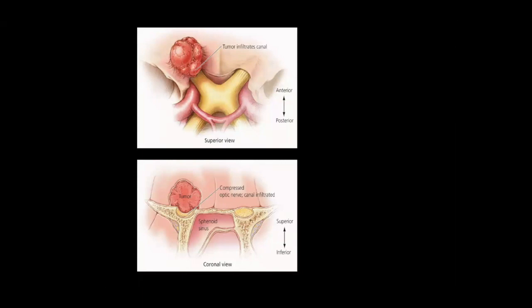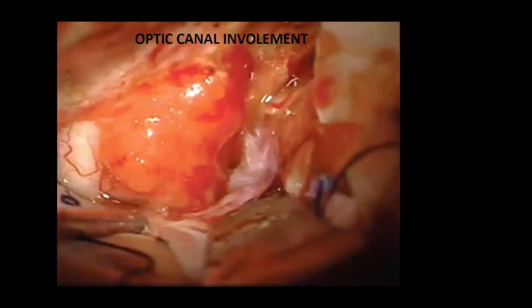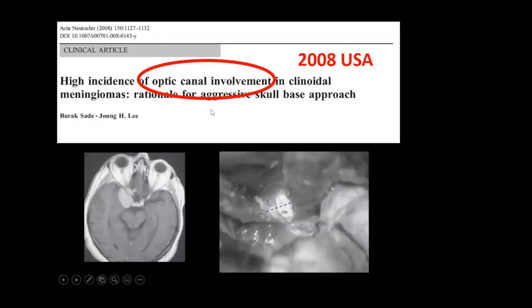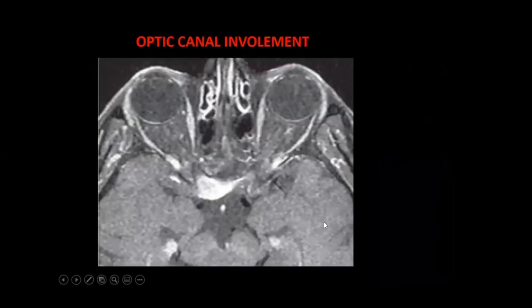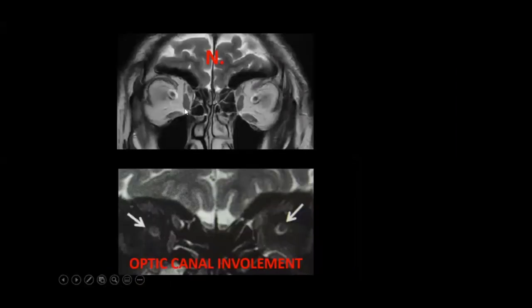This paper describes the high incidence of optic canal involvement. You can actually see optic canal involvement on MRI. On T2, you can see the optic nerve — a normal optic nerve has subarachnoid space with CSF around it. If you don't see the CSF, the optic canal is involved.